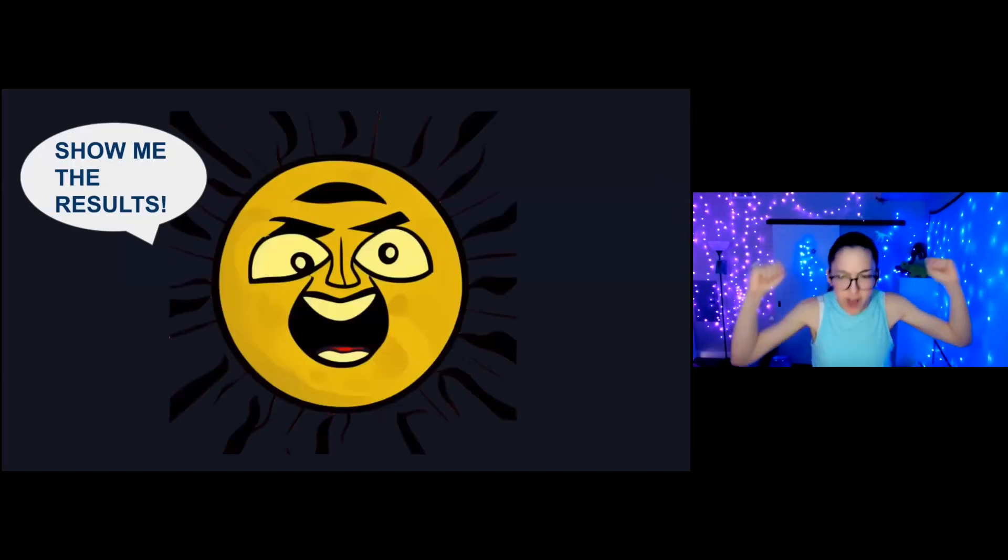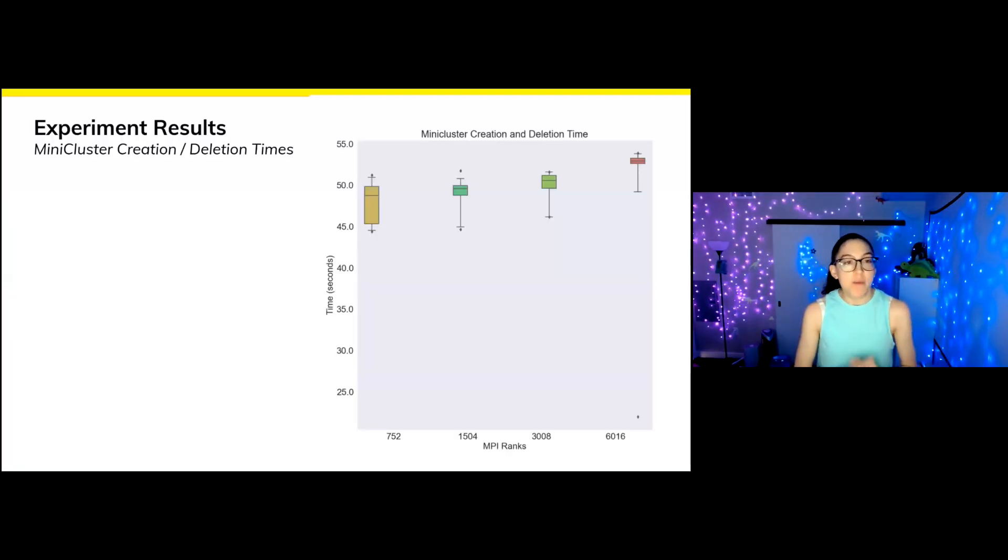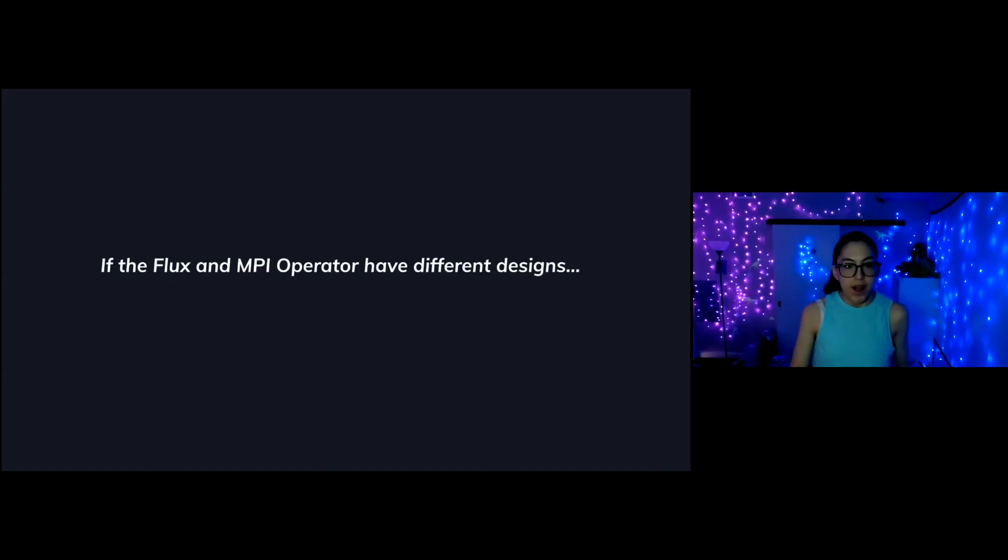Show me the results. Apparently our sun god at the empirical experiment island is angry. Right away, sun god. Okay, sun god has questions. If the flux operator mini cluster is created via an index job, how well does that scale? Well, here you're looking at mini cluster creation and deletion times. So this includes the entire bringing up and then bringing down of the pods, but does not include LAMMPS. And as we move across the x-axis, we move from size eight to size 64, so the cluster gets bigger. And the really cool part is that this scales really nicely. The index job is doing a great job.